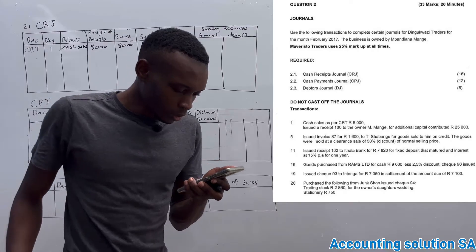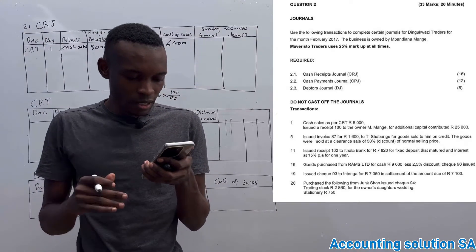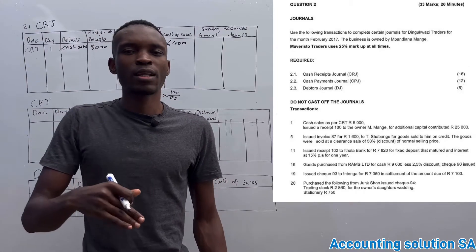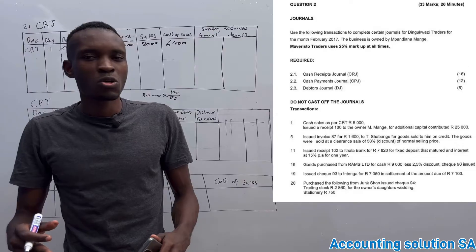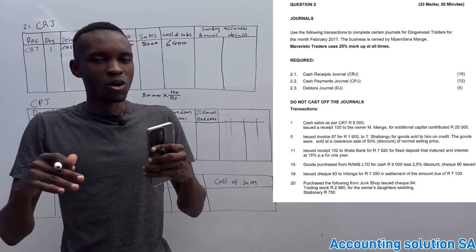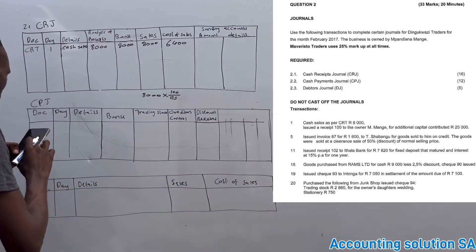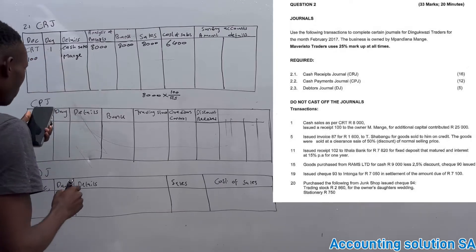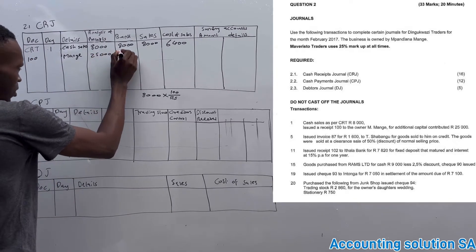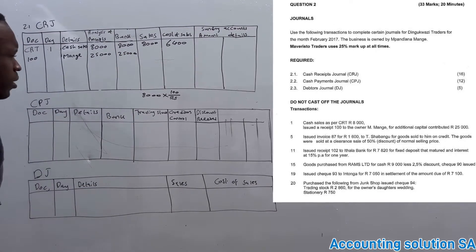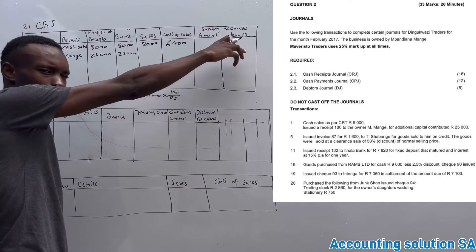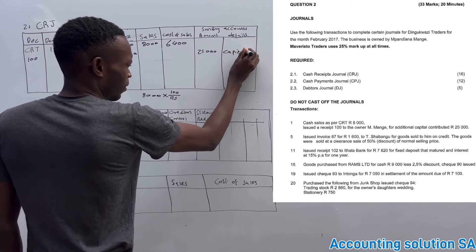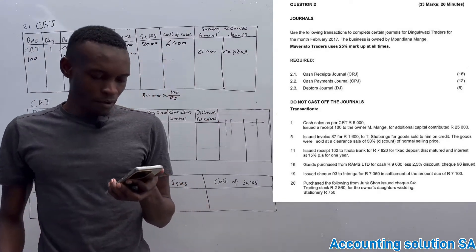On the same day, they said issued receipt number 100 to the owner for additional capital contribution. The business has received cash from the owner, which is a capital contribution. Capital is money used to operate a business — it's cash contributed to start the business. The amount is 25,000 paid by Mange. The amount received is 25,000 and it goes into the bank. Because we don't have a capital column, we go to the sundry account with amount 25,000 and we indicate 'capital'.